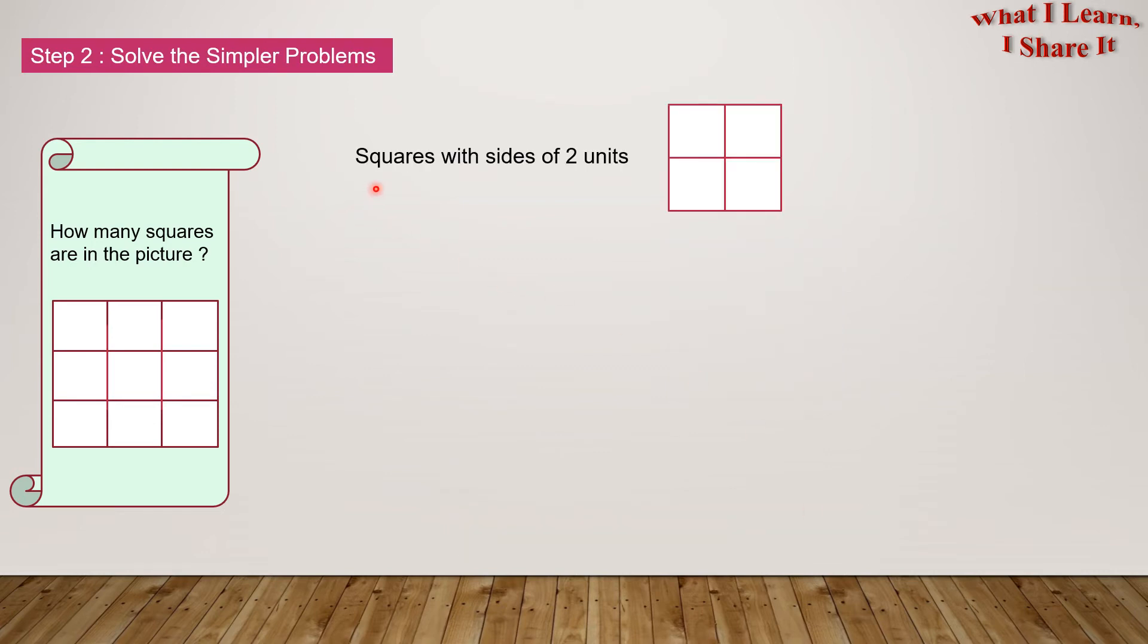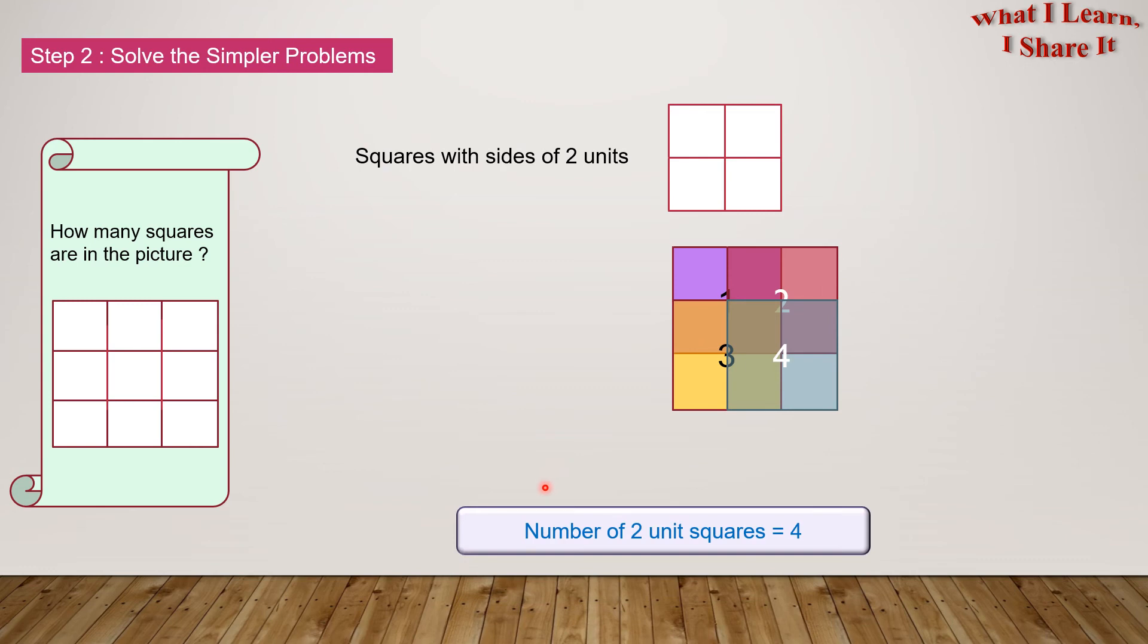Now we'll be starting with squares with the size of 2 units, which looks like this. And here is our model again. 1, 2, 3, and 4. Number of 2 unit squares equals 4.